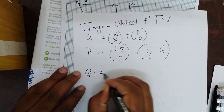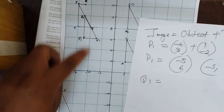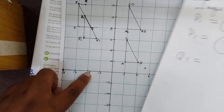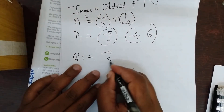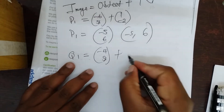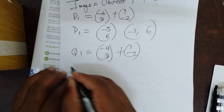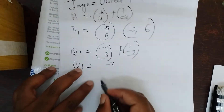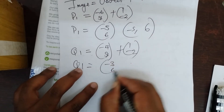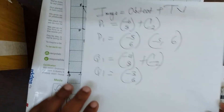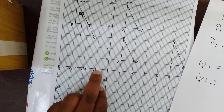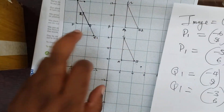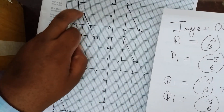For Q1, you say Q1 equals the object Q. The coordinates for Q are negative 4, 8. Negative 4, 8 plus translation vector 1, negative 2. So Q1 is going to be: negative 4 plus 1 gives negative 3, and 8 plus negative 2 gives 6. So Q1 is negative 3, 6. This is negative 2, this is negative 4 — negative 3 is here, comma 6. Repeating that process, you'll find R1 will be at that point.